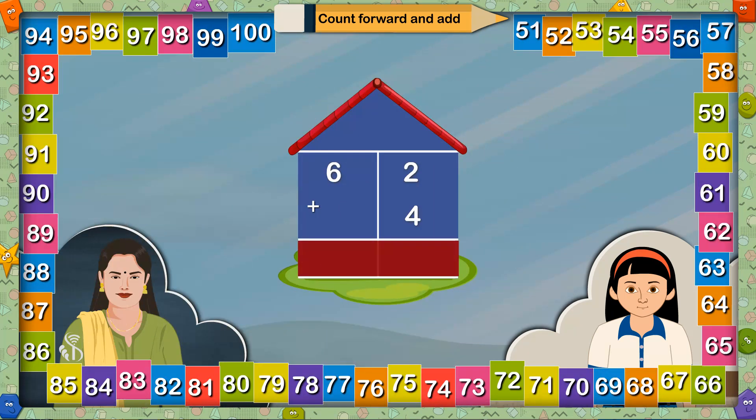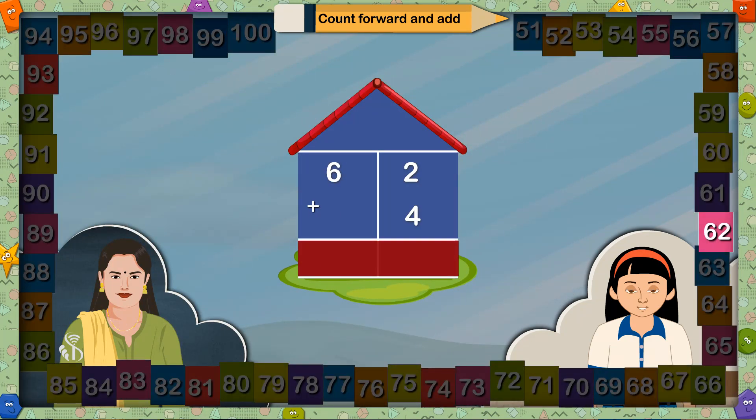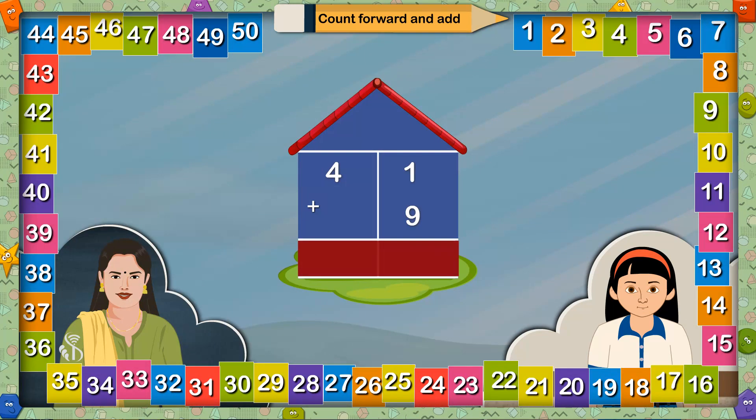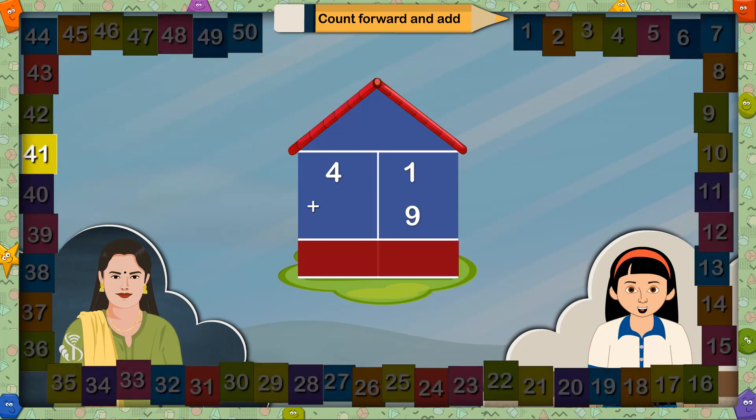62 plus 4 equals? Let us count 4 places after 62: 63, 64, 65, 66. 41 plus 9 equals? 9 places after 41 means 50.